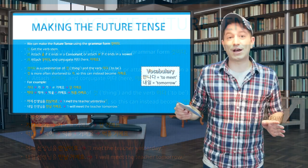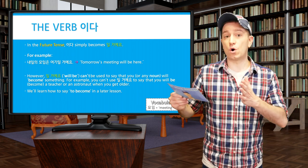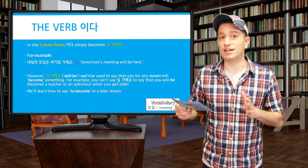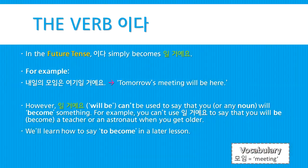Let's talk a little bit more about the verb 이다, 'to be.' In the future tense, 이다 becomes 일 거에요, just like normal. For example, 내일의 모임은 여기 일 거에요 — 'Tomorrow's meeting will be here.' However, 일 거에요 cannot be used to say that you or any noun will become something. For example, you couldn't use 일 거에요 to say that you will become a teacher or an astronaut when you get older. We'll learn how to say 'to become' with a different verb in a later lesson.